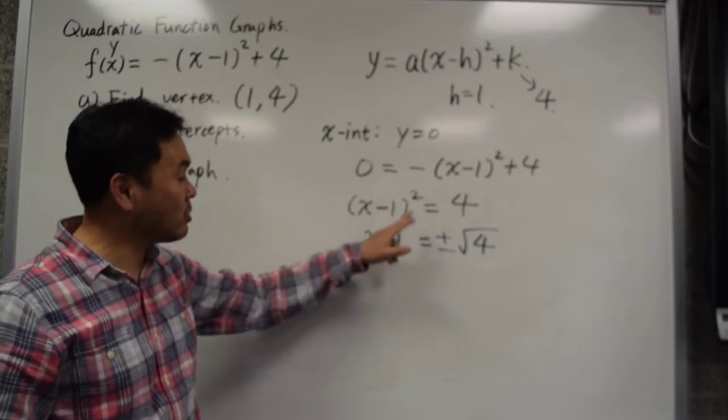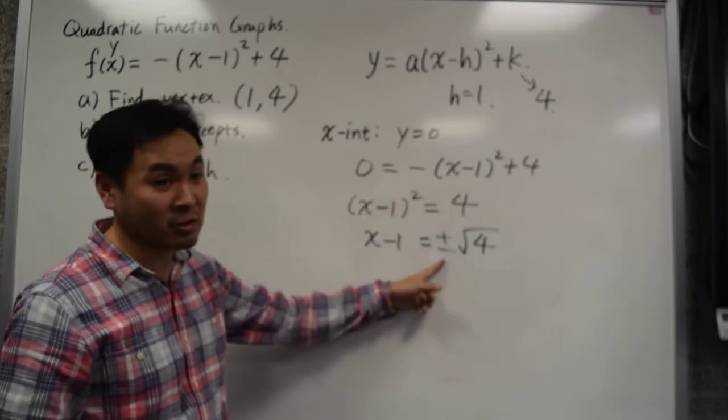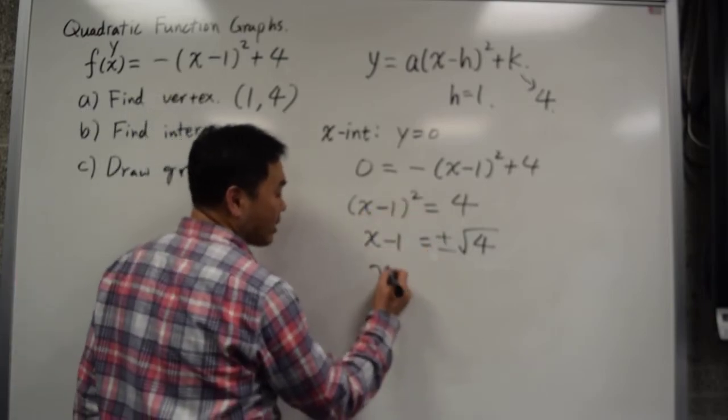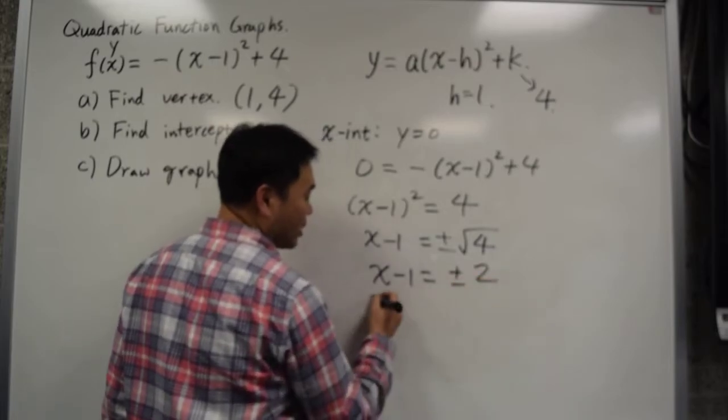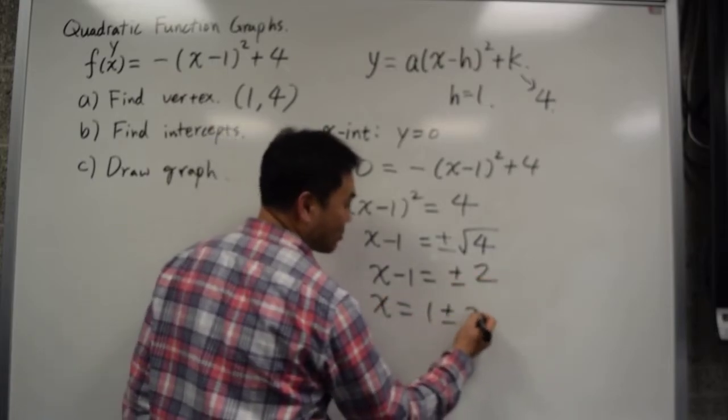So always remember, when you take away the square, put plus minus. And then you have x minus 1 equals to plus minus 2. x is equal to 1 plus minus 2.